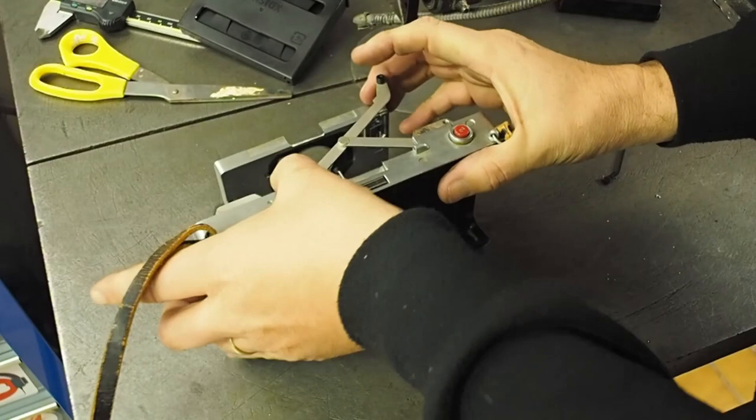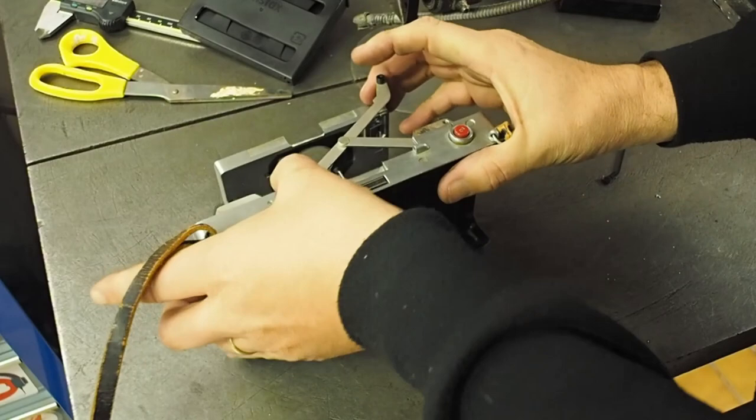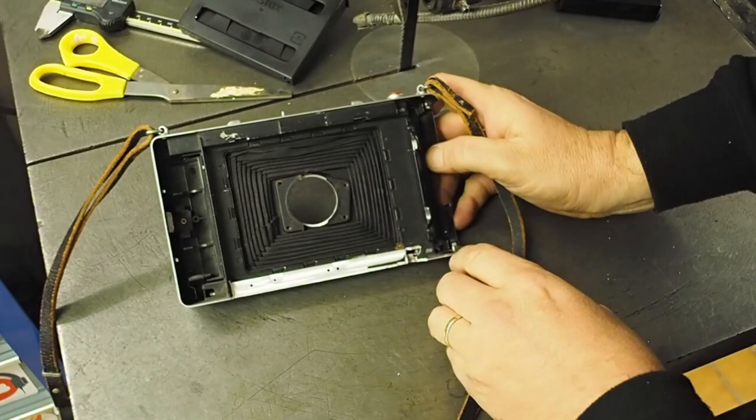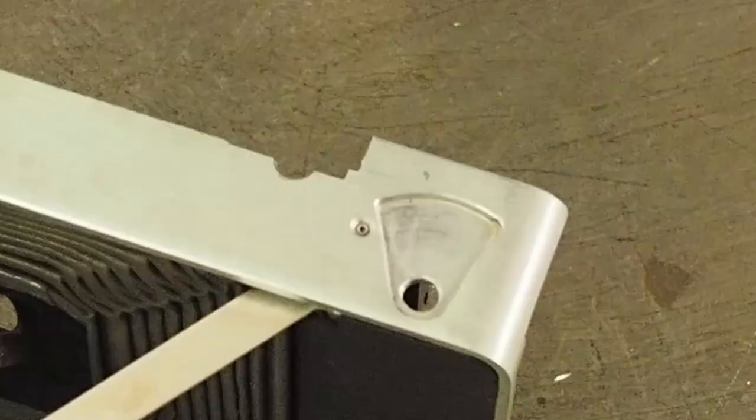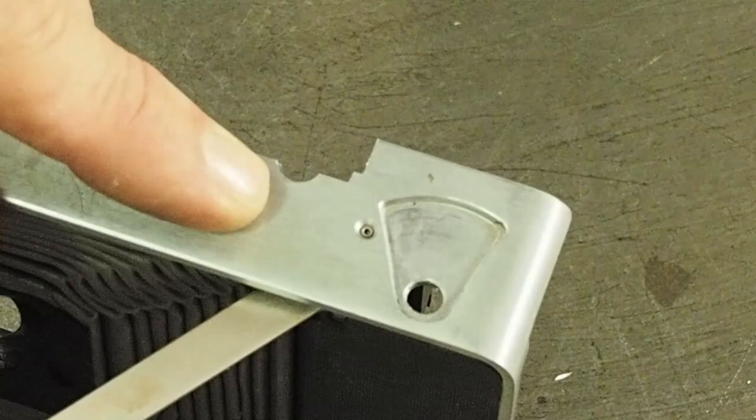Well that was a pretty good demonstration of why you shouldn't use a CNC mill as a manual mill. I totally screwed up there and punched a hole through this spot. Luckily it's not critical, it's just where the lens mount lever arm lives once it's fully extended.